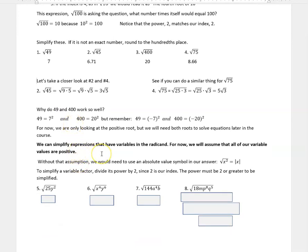We can also simplify expressions that have variables in the radicand. For now, we're going to assume that all those variable values are positive. Without that assumption, we would need to use an absolute value symbol in our answer. The square root of x squared is actually the absolute value of x. But we're just going to say it's positive, that saves us that hassle. In order to simplify a variable factor, divide its power by 2, since 2 is our index. If this was a cubic root, we would be dividing by 3. When you're doing something like this, the square root of 25y squared is going to be 5y. You take this power of 2 and divide by 2, because 2 is the index.